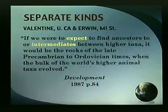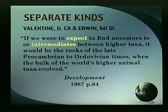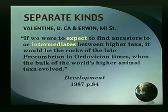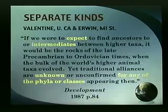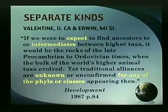We read from Valentine and Erwin, two of the leading evolutionary biologists in the world, writing in their textbook: if we would expect to find ancestors or intermediates between higher taxa, it would be in the rocks of the late pre-Cambrian or Ordovician time. That is where you would expect to find the ancestors of the higher taxa — that is when the bulk of the world's higher animal taxa evolved. Yet traditional alliances are unknown or unconfirmed for any of the phyla or classes appearing in them. You find no connecting branches, unknown intermediates for any of the phyla or classes. They are not connected; they are separate and distinct — and this is their acknowledgement.